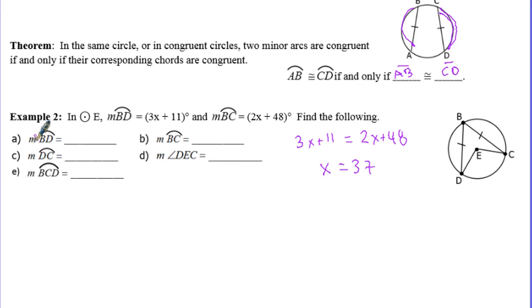When it asks us what is the measure of arc BD, now we have to substitute 37 back into this problem. So 3 times 37 plus 11, and when you do that, you should get 122 degrees. BC should be equal to that. You can check yourself by putting 37 in for x, or if you trust your judgment, you can just say 122. So this is 122 and this is 122.